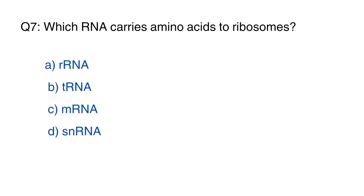Question number 7. Which RNA carries amino acids to ribosomes? The right option is B, tRNA.